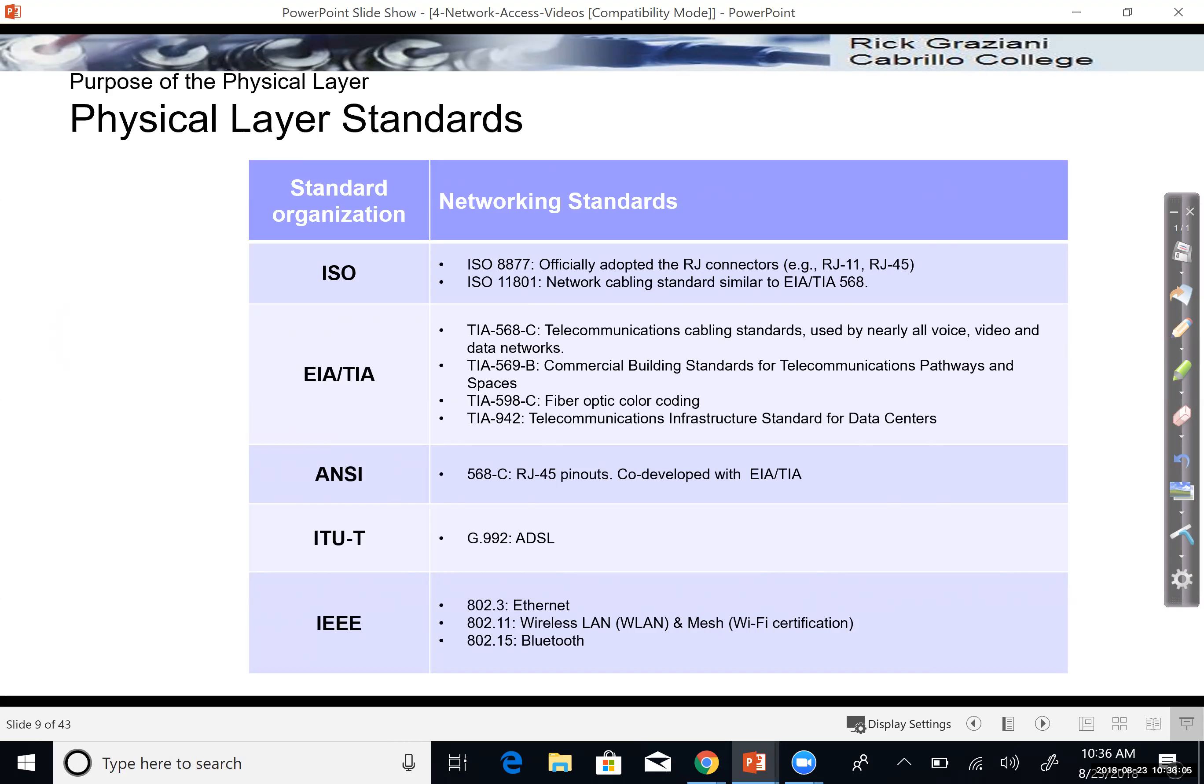Here's showing some of the different standard organizations and what they do. ISO, EIA, TIA. You see EIA, TIA involved in cabling standards, also rack mounts, things like that. The ANSI has to do with some of the stuff with cabling and the RJ45 pinouts, co-developed with EIA, TIA. And as we mentioned previously, IEEE is involved a lot with the actual protocol standards, both at the layer one and layer two level.